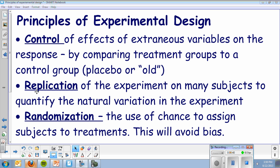Replication - you want to repeat the process over and over and over with a lot of experimental units to make sure that the results are consistent. And then randomization, we've been talking about randomization a lot. What's the purpose of randomization? It's to avoid bias, for a lot of those reasons that we've been talking about.